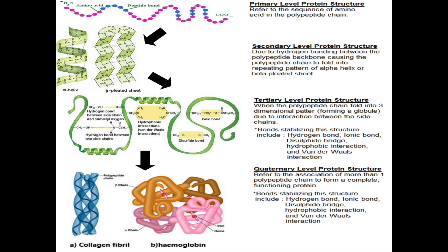For the primary level protein structure, we are looking at the sequence of amino acids in the polypeptide chain — what is the amino acid at position 5, position 6, position 11, position 21, and so on. Since all proteins are made up of a sequence of amino acids, all proteins will have primary level protein structure, because at this level we are only interested in the sequence of amino acids within the polypeptide chain.